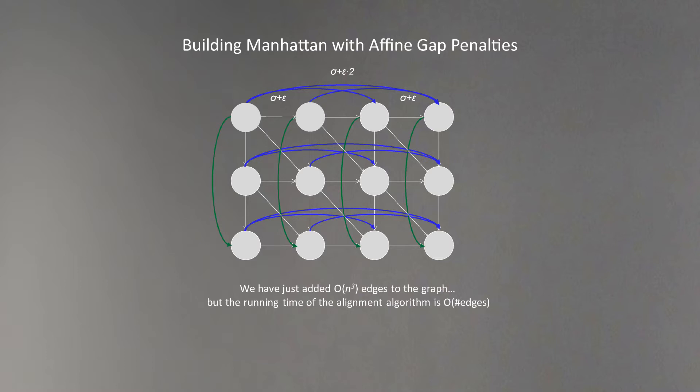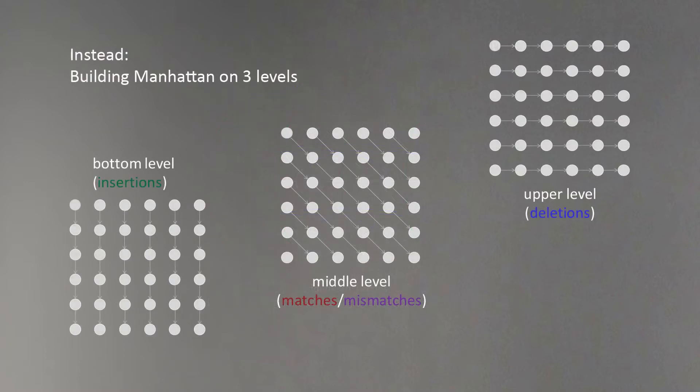How can we improve this running time of the algorithm? We can split our Manhattan grid into three levels: bottom level, middle level, and upper level. The bottom level will represent insertions and will contain only edges which go vertically from node to node. The middle level will represent matches and mismatches and will contain diagonal edges.